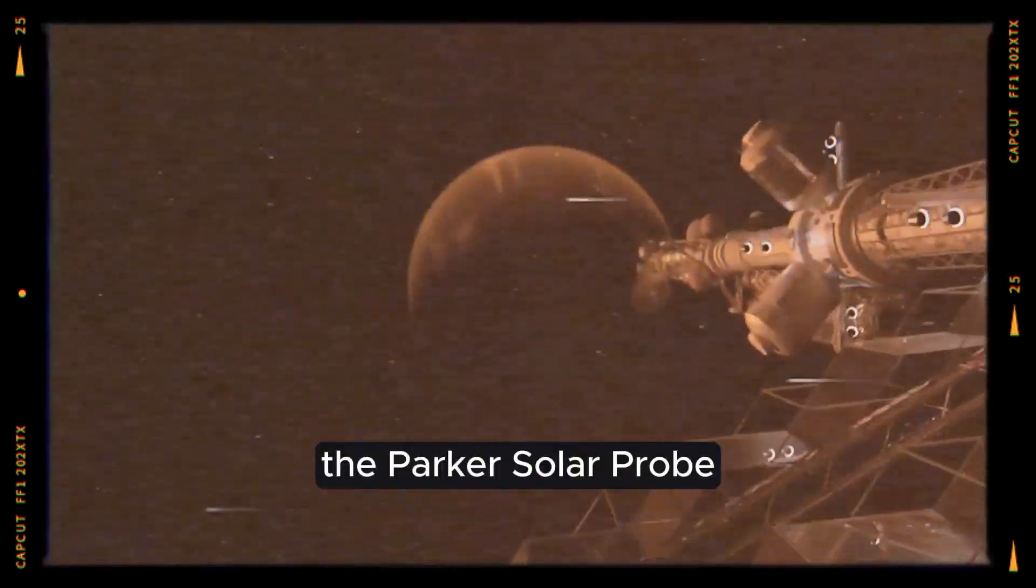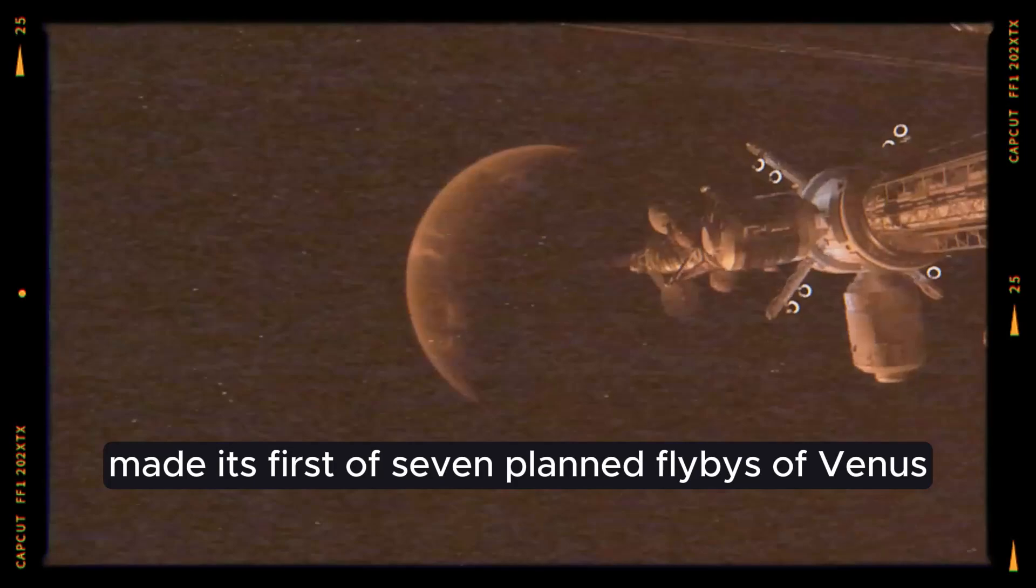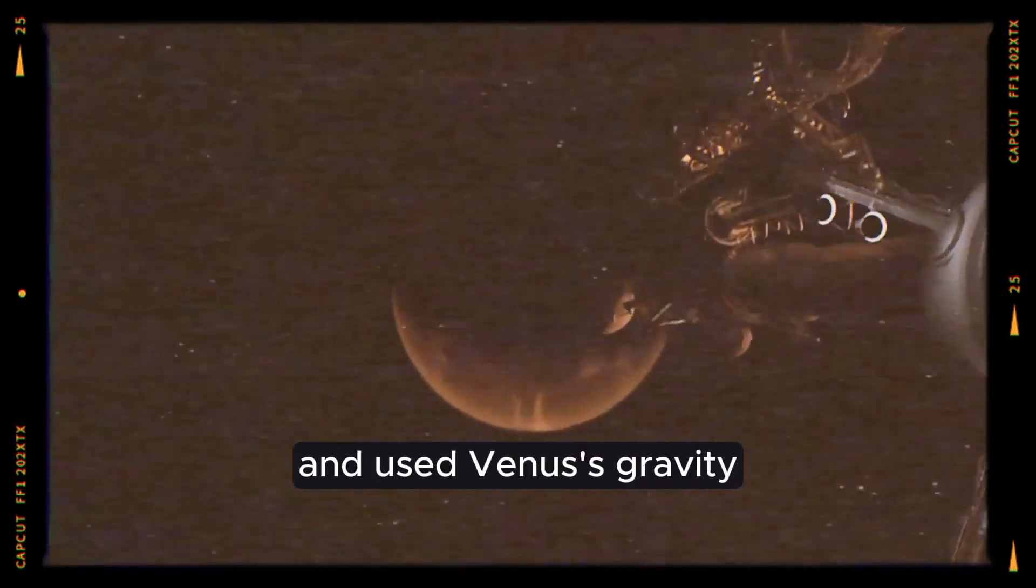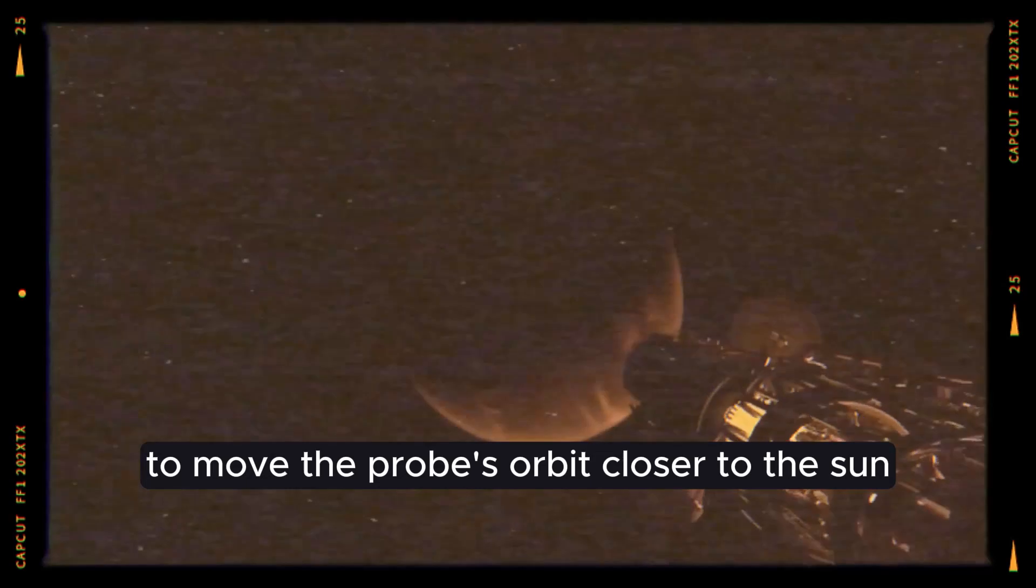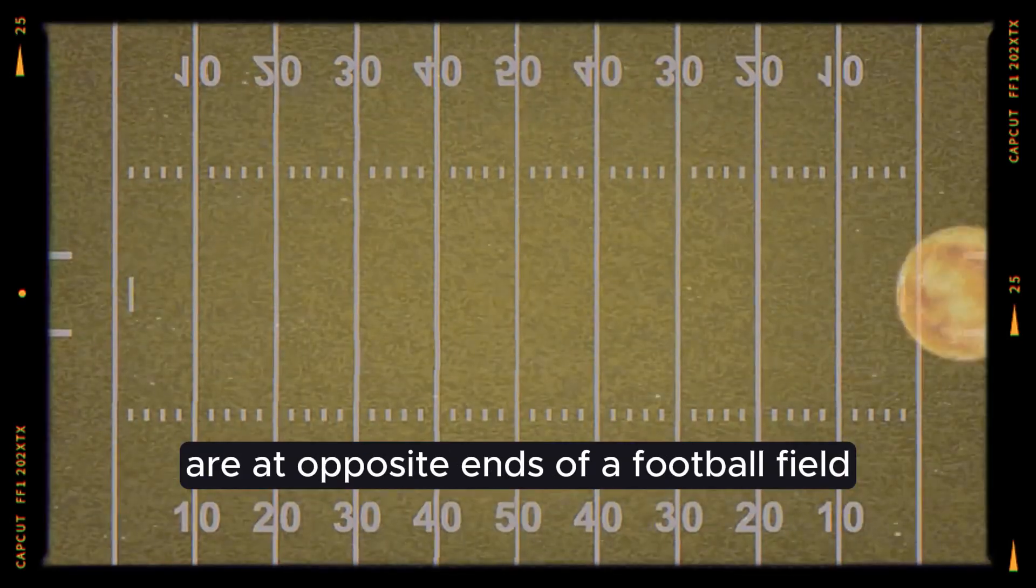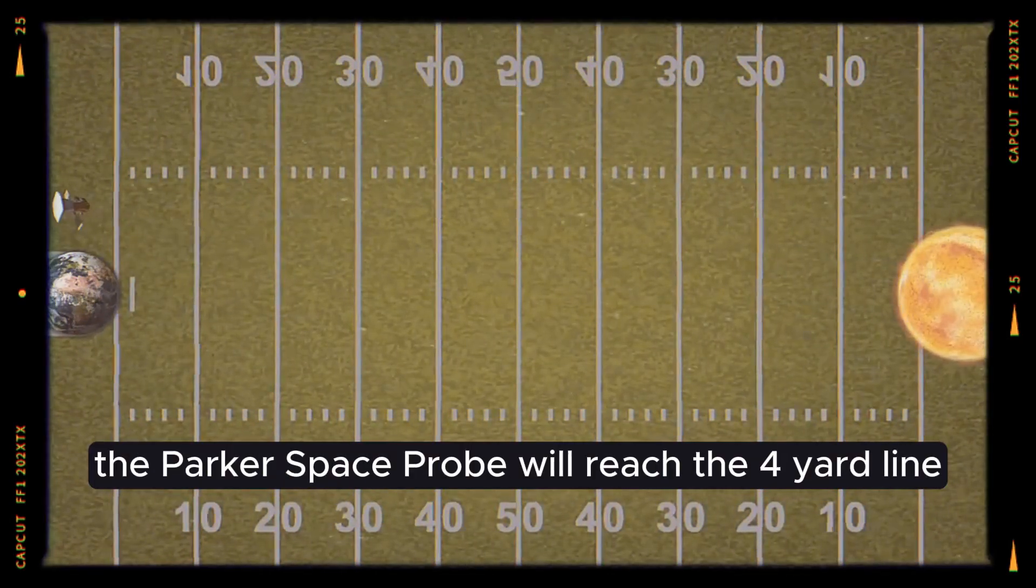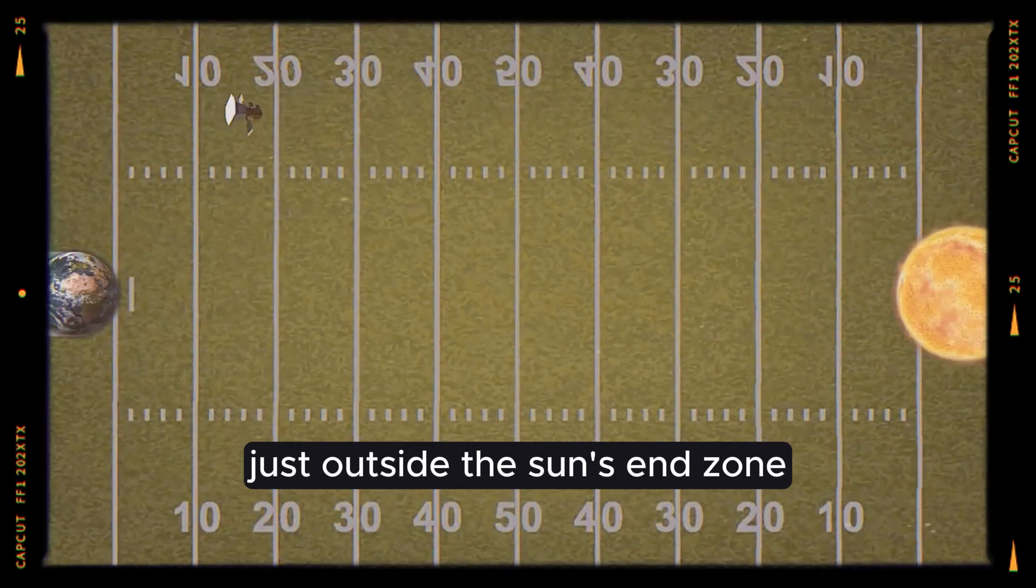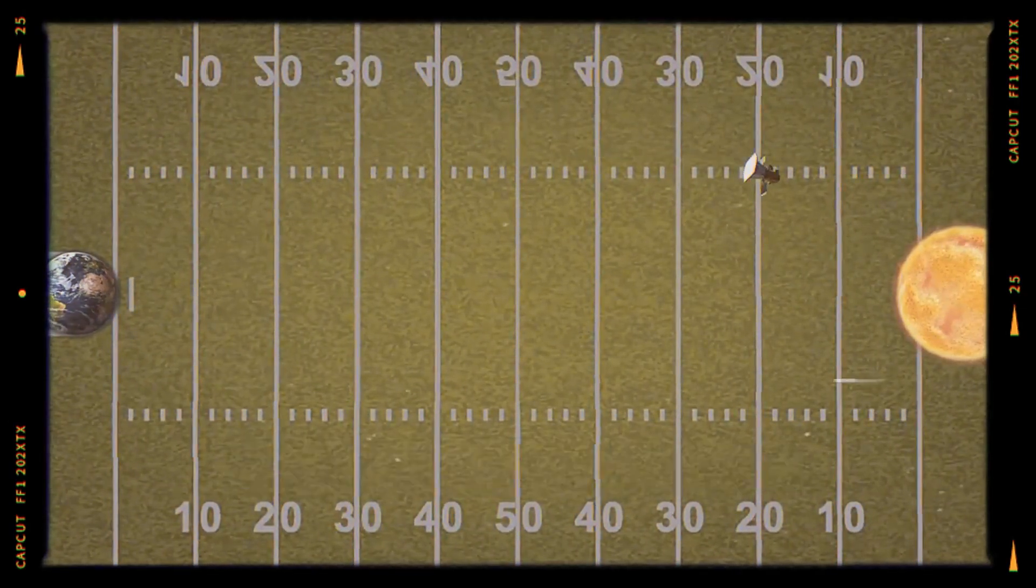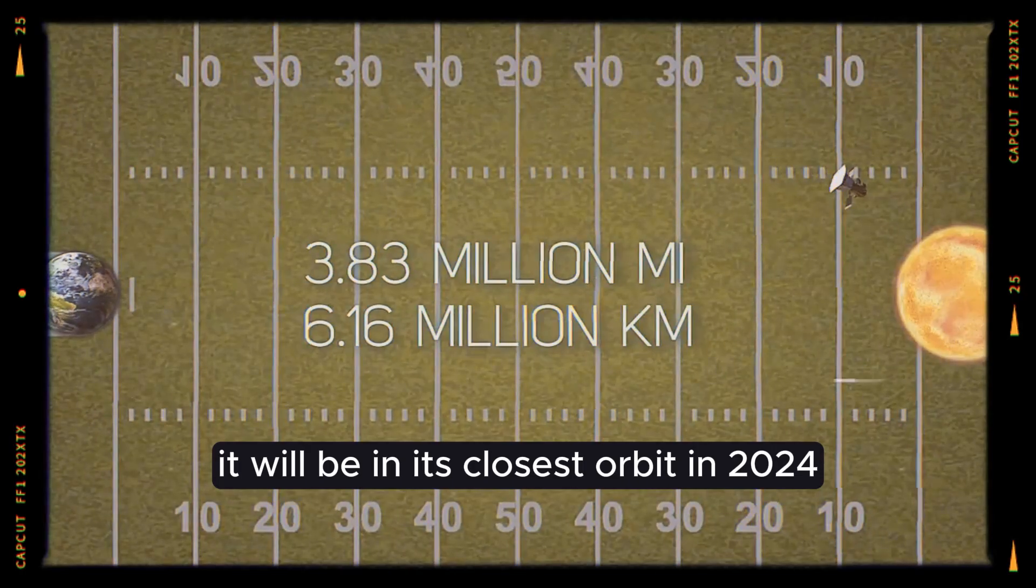The Parker Solar Probe made its first of seven planned flybys of Venus. It went through the planet's top atmosphere and used Venus's gravity to move the probe's orbit closer to the sun. So it's not exactly the center of the sun, but imagine that the sun and Earth are at opposite ends of a football field. The Parker Space Probe will reach the four yard line just outside the sun's end zone, which is 3.83 million miles away. It will be in its closest orbit in 2024.